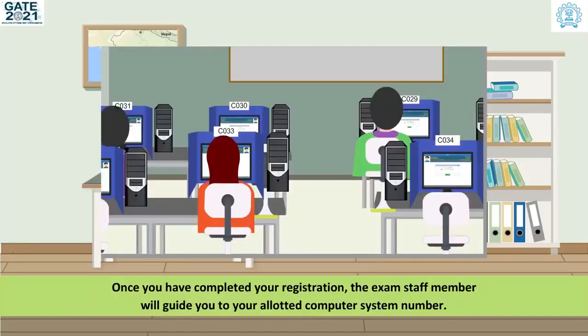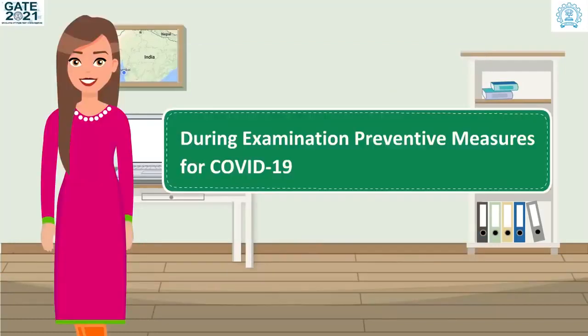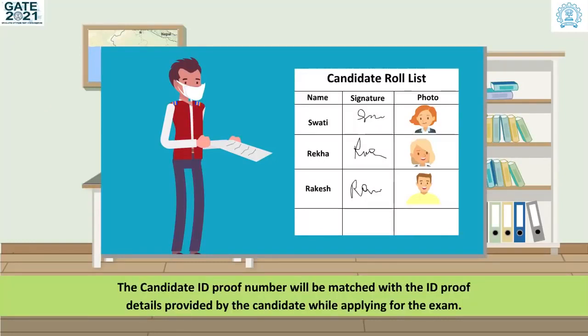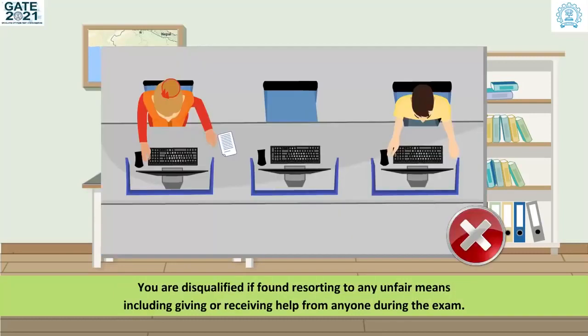Once you have completed your registration, the exam staff member will guide you to your allotted computer system number. During examination preventive measures for COVID-19: a staff member will approach and ask you to sign on the candidate role list and compare your signature with the original ID. The candidate ID proof number will be matched with the ID proof details provided by the candidate while applying for the exam. You are disqualified if found resorting to any unfair means, including giving or receiving help from anyone during the exam.